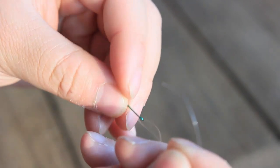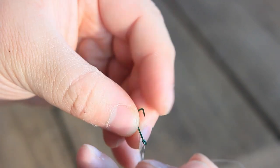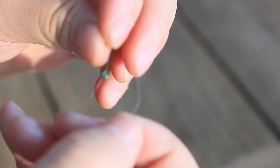Especially when it's dark and you can't see much. So loop it through, then turn your hook a couple of times. You only need to do about 4 because you'll probably have to change your hooks anyway.